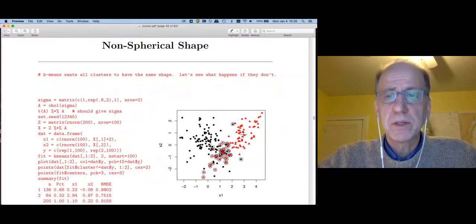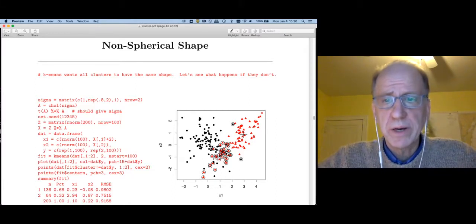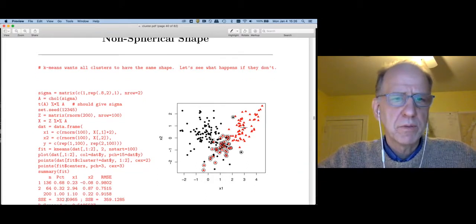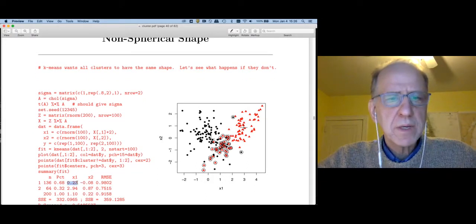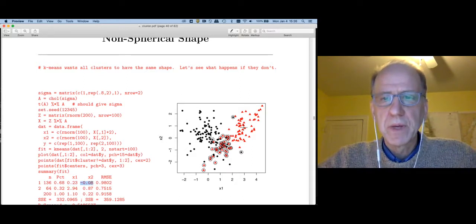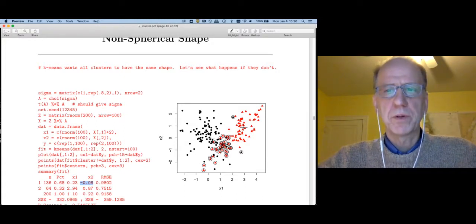So that 0.8 is a covariance, but if you divide the covariance by the product of the standard deviations, which equals 1, it's also the correlation. When we ran k-means on this, k-means had a lot of problems. What it ended up doing was making a fairly small red cluster up to the right. Then all of these observations that should have been red got labeled black by k-means.